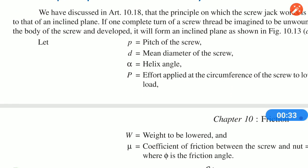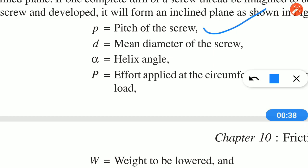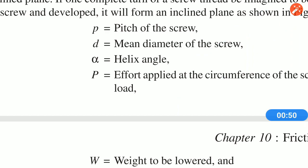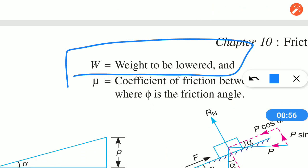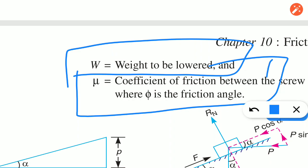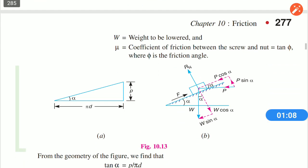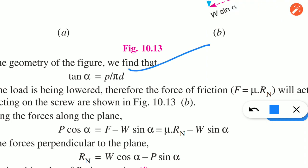Here are the terms. P is the pitch of the screw. D is the mean diameter of the screw. Alpha is the helix angle. P is the effort applied. W is the load to be lowered. Mu is the coefficient of friction between bolt and nut. Mu equals tan(phi). tan(alpha) equals P divided by pi·D.